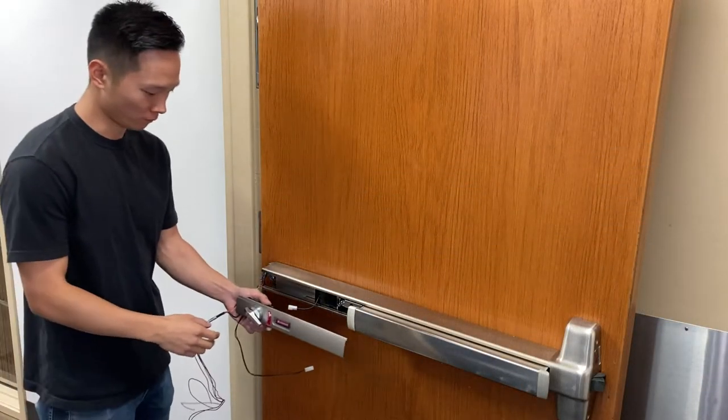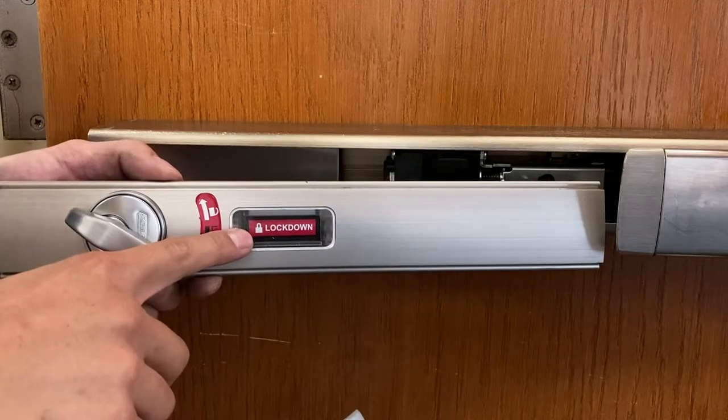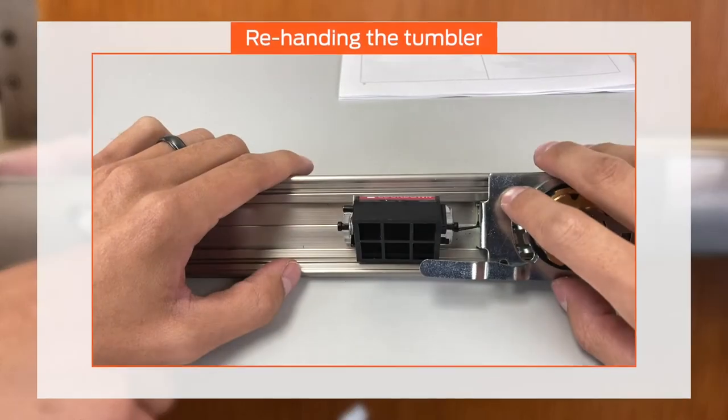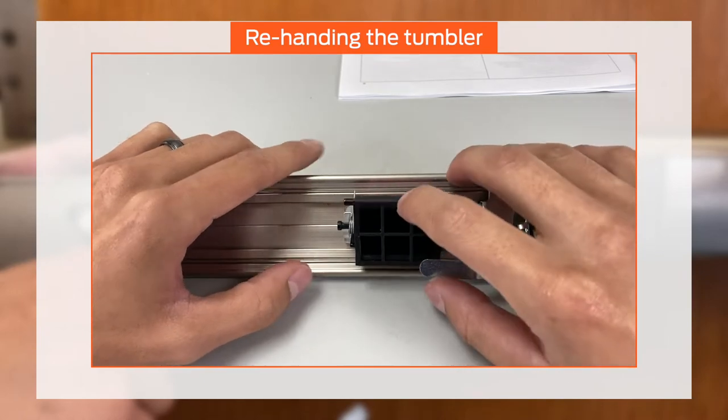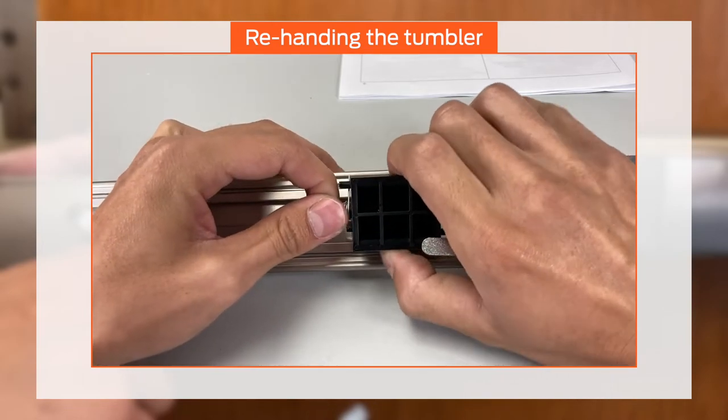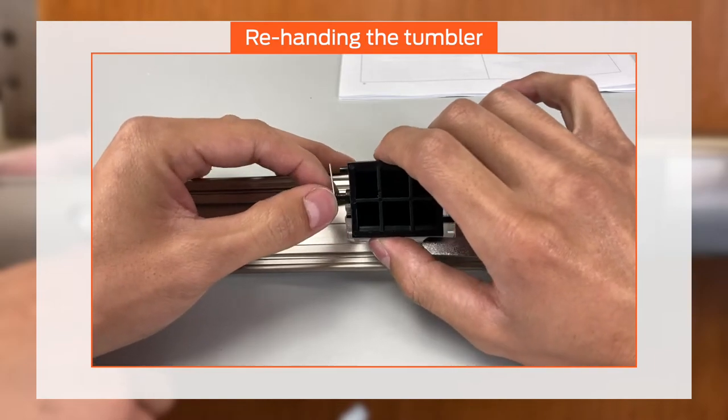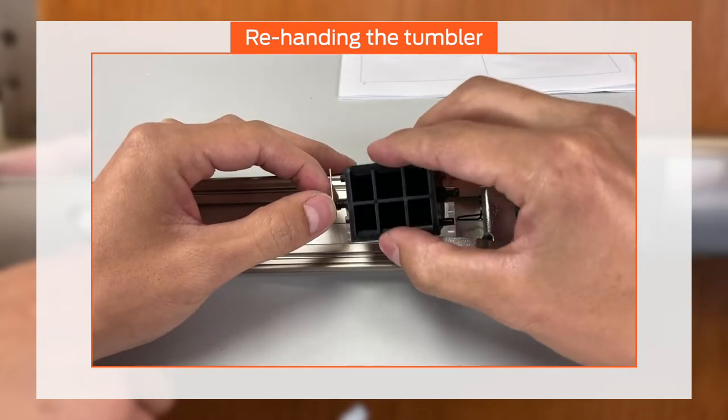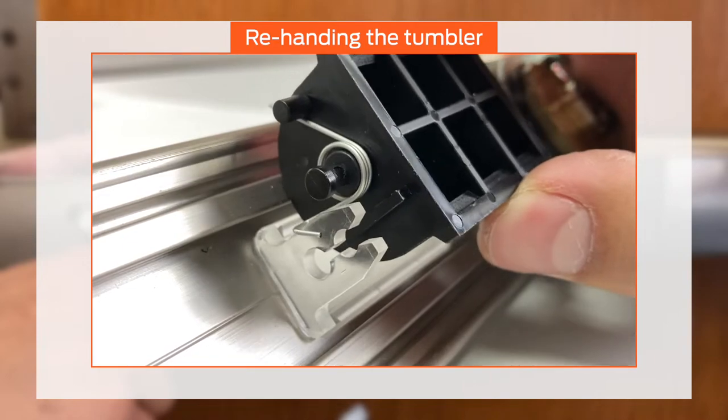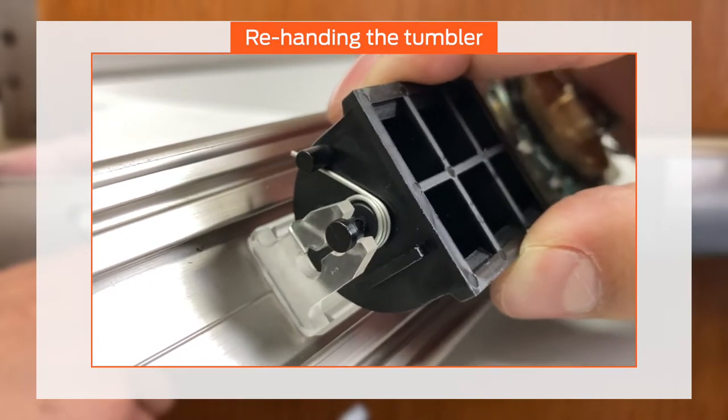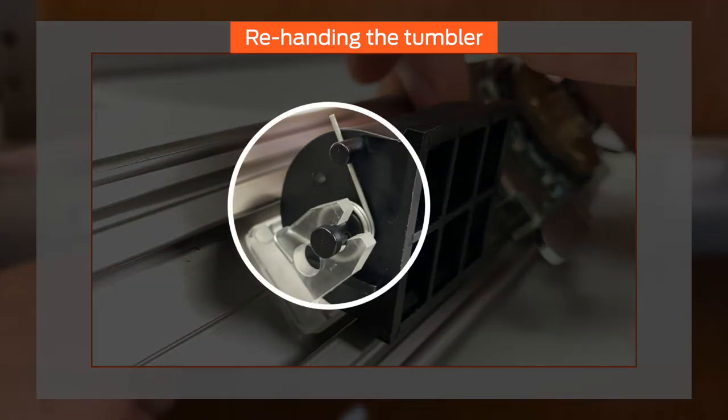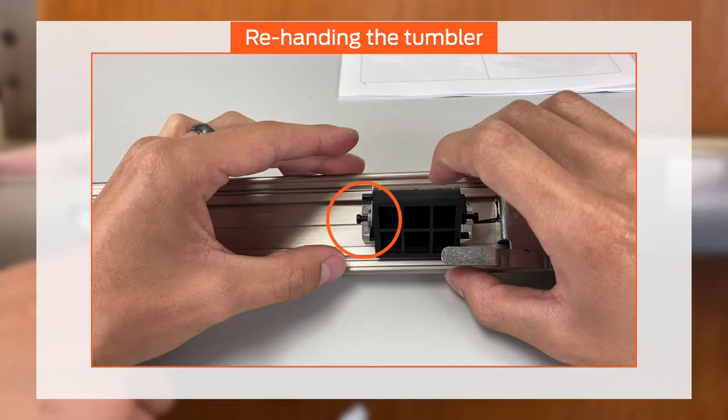Hold the ESL assembly in position on the exit device and check that the indicator text is upright. If the text is upside down, the tumbler can be re-handed. Take note of the position of the spring, then gently remove the tumbler assembly from the clips holding it in place. Remove the spring from the tumbler. Rotate the tumbler 180 degrees and replace the spring. Then reinstall the tumbler, hooking the spring against the outer edge of the clip as shown and pushing into both clips until it snaps into place. The spring must be in this exact position and on the opposite side of the key switch in order for the tumbler to operate properly.